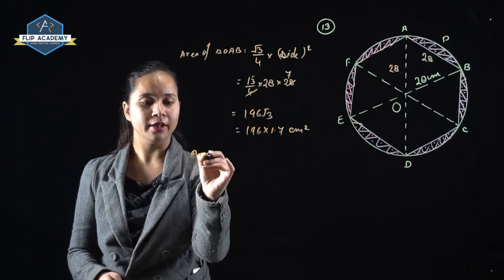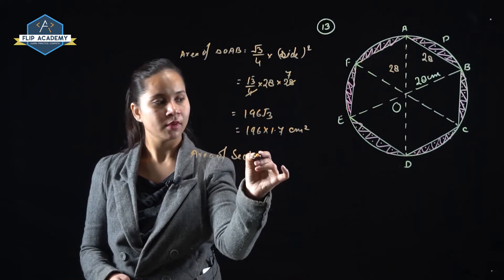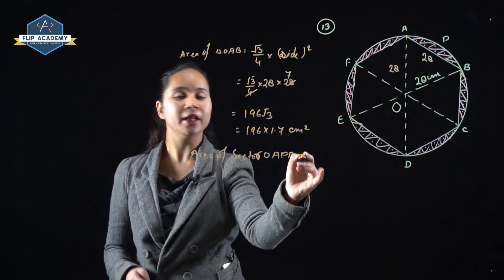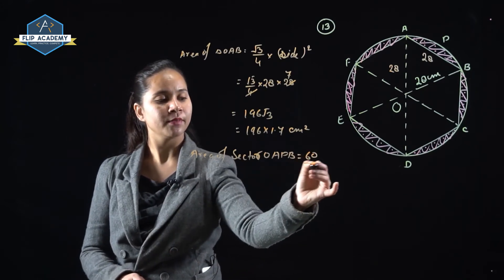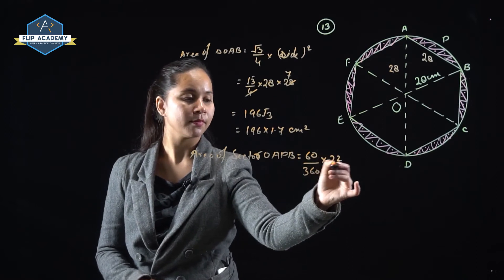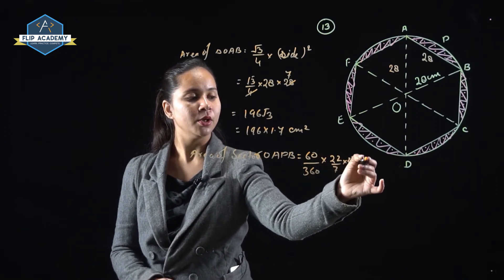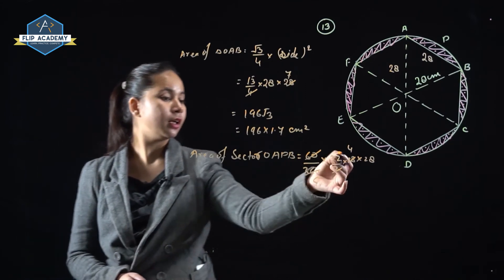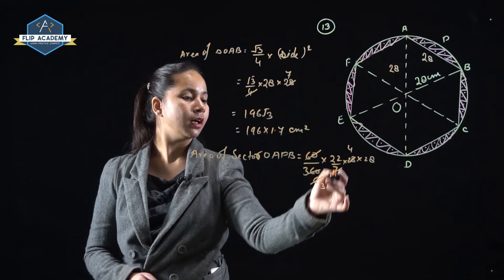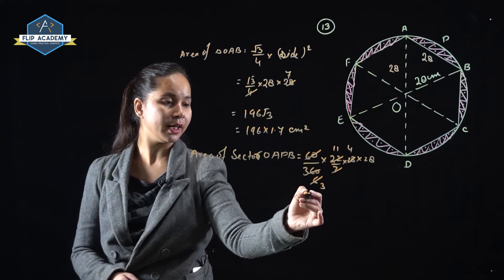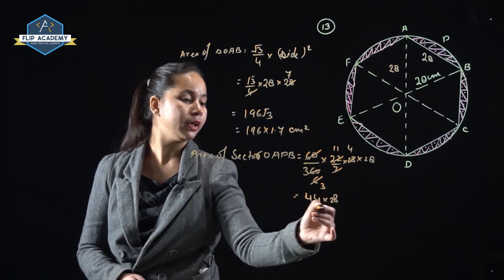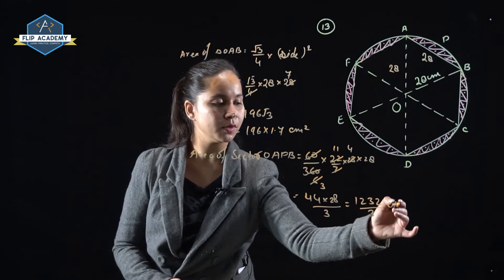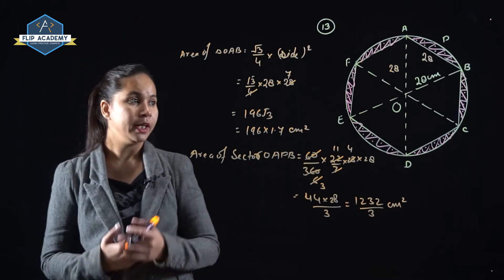Now let's find the area of sector OAPB. Area of sector OAPB = (θ / 360) × π × r². Here θ = 60°, so it becomes (60 / 360) × (22 / 7) × 28 × 28. Simplifying: (1/6) × (22/7) × 784 = 11 × 4 × 28 / 3 = 1232/3 cm².